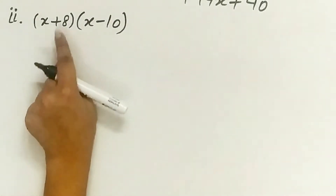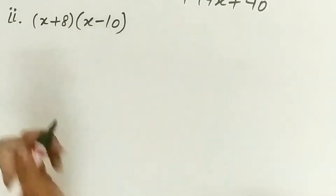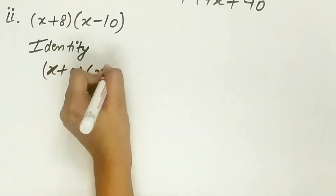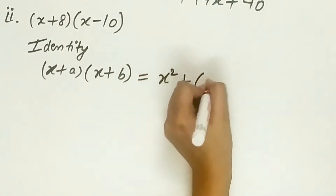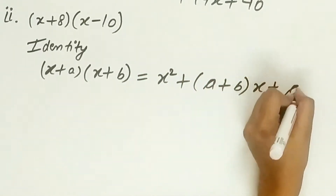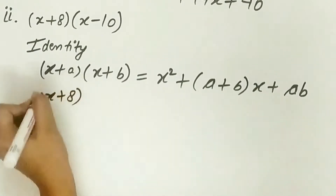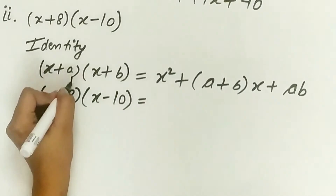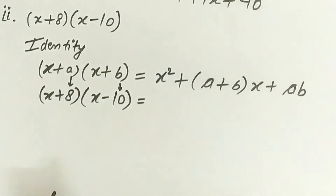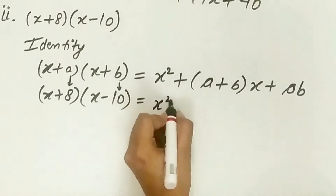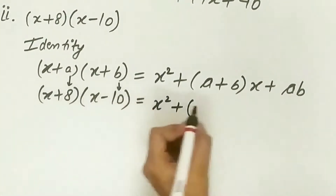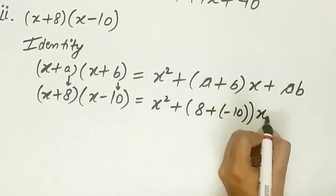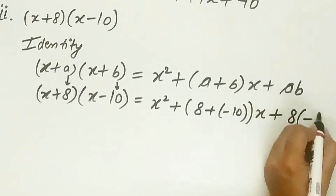The second part is (x + 8)(x − 10). We use the same identity: (x + a)(x + b) = x² + (a + b)x + ab. Here, a is 8 and b is minus 10. Substituting: x² + (8 + (−10))x + 8 × (−10).